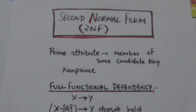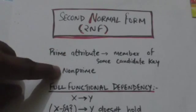An attribute of a relation schema R is called a prime attribute of R if it is a member of some candidate key of R. If an attribute is not a prime attribute, then it is called non-prime.